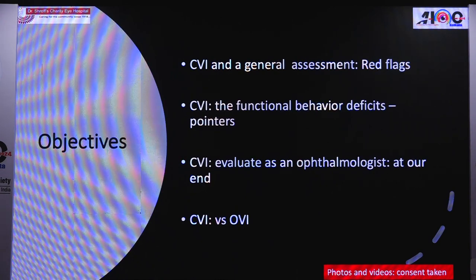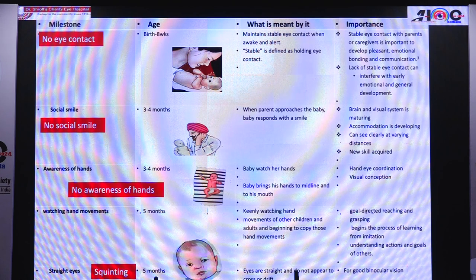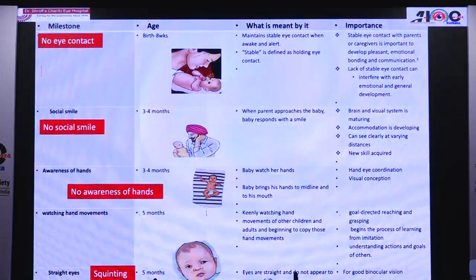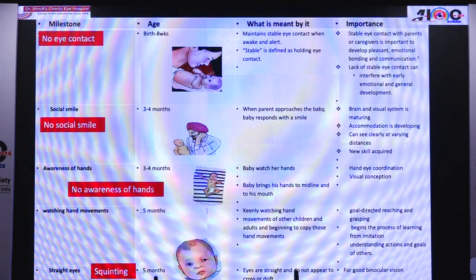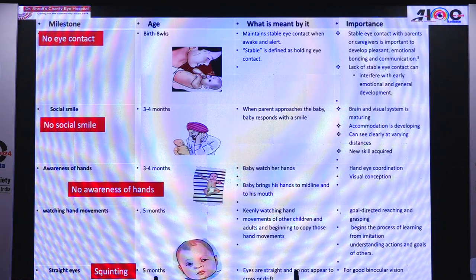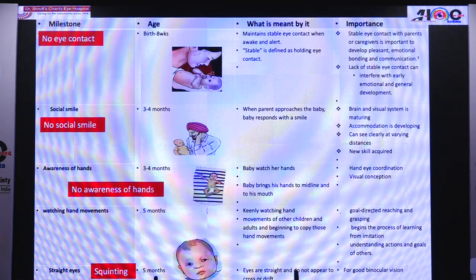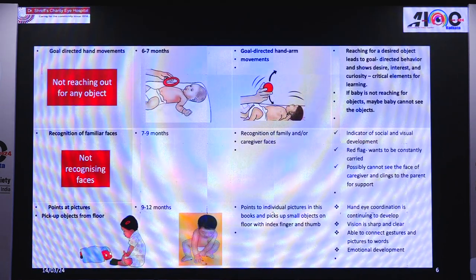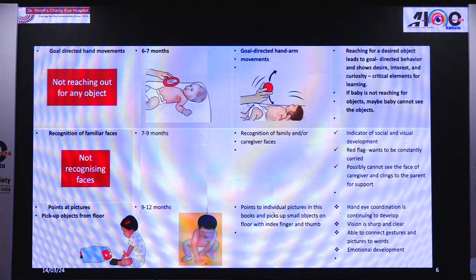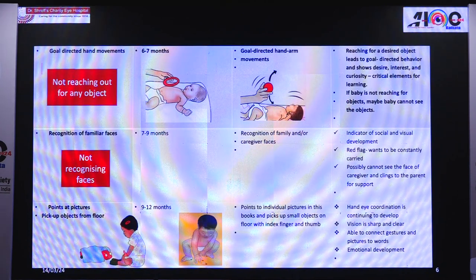Red flags to assess a CVI child presenting to OPD: at birth and by two months, if there is no eye contact or unstable eye contact, that should be alarming. By three to four months, if there is no social smile or no awareness of hands and no desire to explore their own hands — these are features indicating mild developmental issues by three months. By five months if there is squinting, or by six to seven months if the child is not reaching out for objects, not recognizing faces including the mother's face, these children are on the course of developmental delay.